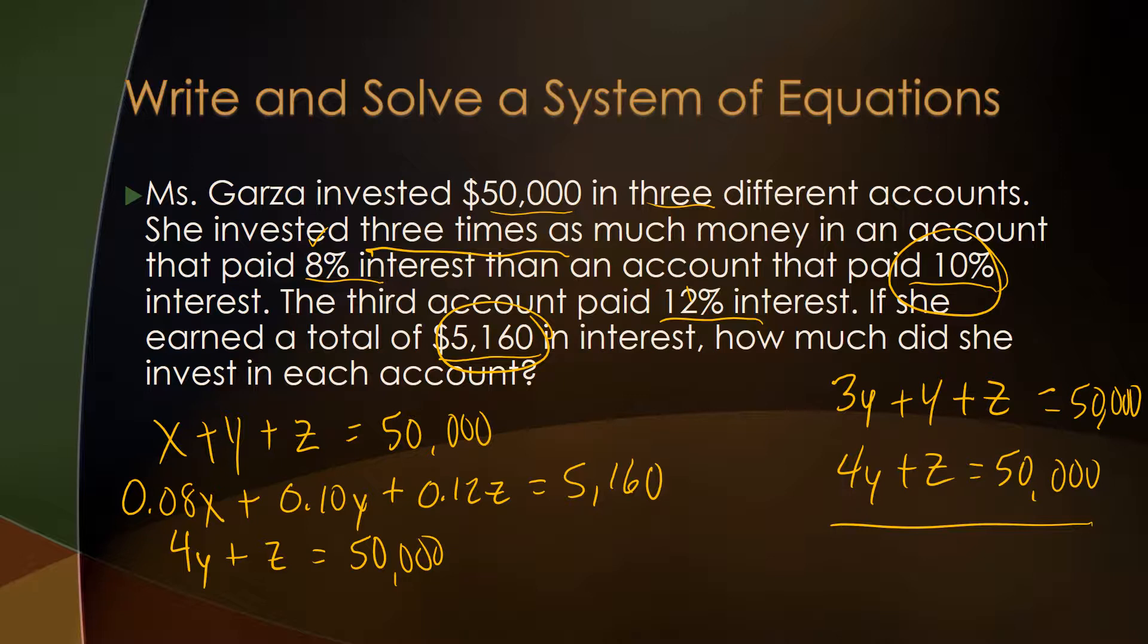She's put three times as much in the 10% account, which is Y. So three times Y is how much she put in X plus Y plus Z equals $50,000. So my third equation is 4Y plus Z equals $50,000. All right, at least we got our equations written. Let's step over here and see if we can't figure out how to solve these systems of equations in three variables.